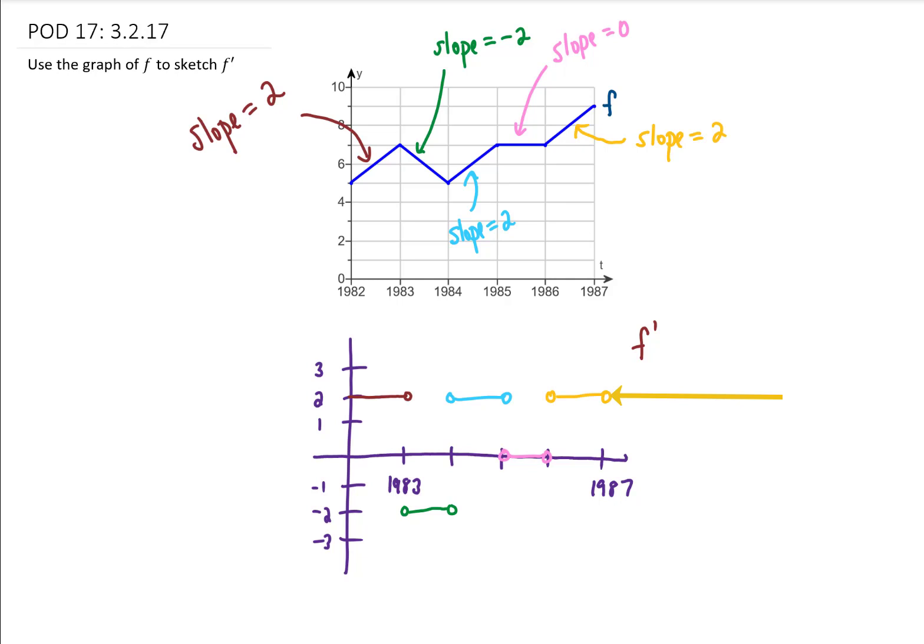Okay, that's pretty much it for that problem. The only other point that I want to make is that the derivative of this function does not exist at any of the corners of the original function. Right at the x value 1983, for example, the function is not rising at 1983 and it's not falling at 1983. The slope of the function is just changing, so the slope of the function itself does not exist. Therefore, we have these open circles at all of the corners on our derivative.